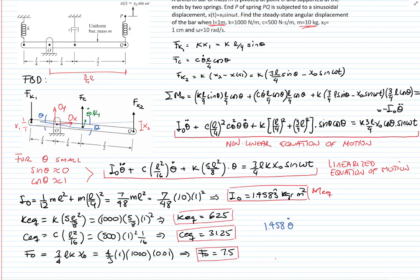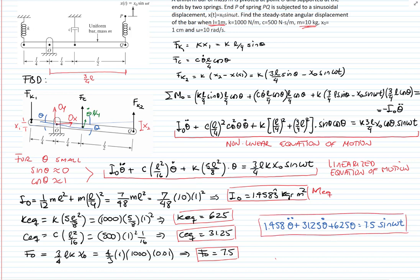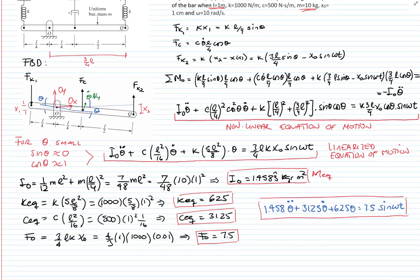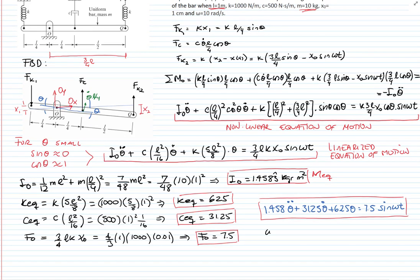We can now rewrite the equation in standard form: mass moment of inertia times angular acceleration plus the equivalent damper constant times angular velocity plus the equivalent spring constant times rotational displacement equals F0 sine(omega t). This is a standard second-order differential equation whose response we know how to solve.